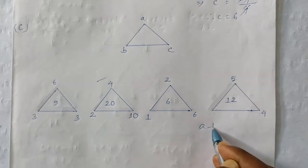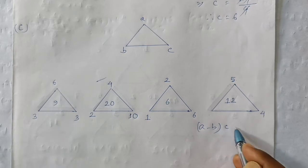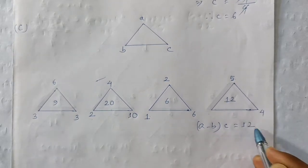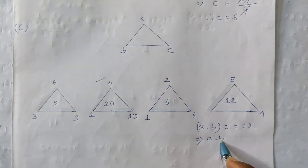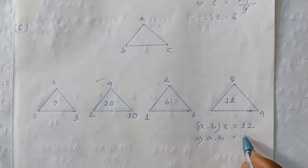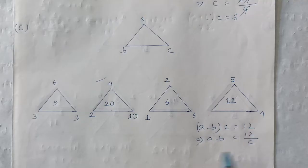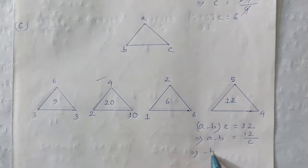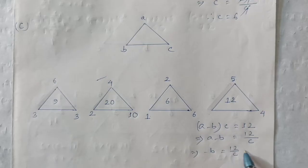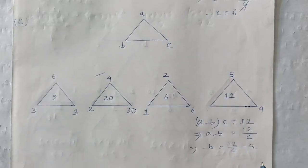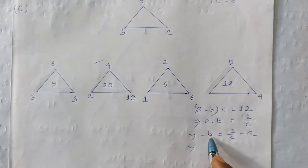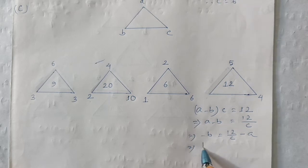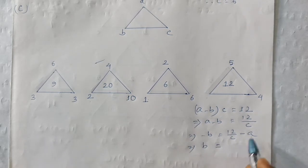This means a minus b equal to a minus b equal to a minus c. This implies minus b equal to 12 by c minus a. This implies a minus b equal to c. This implies a minus b equal to a minus c.